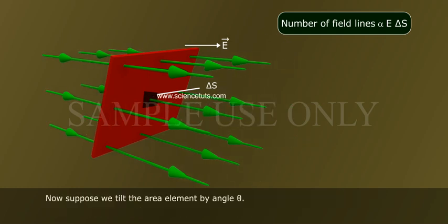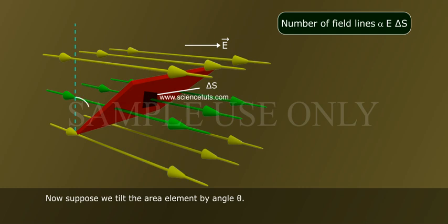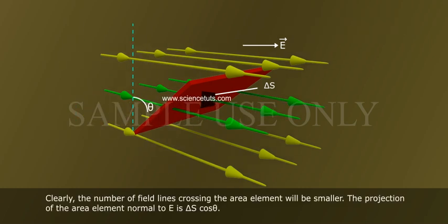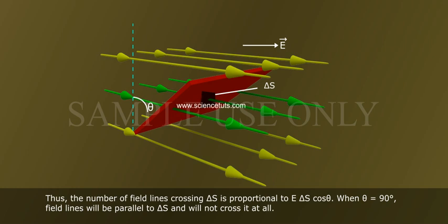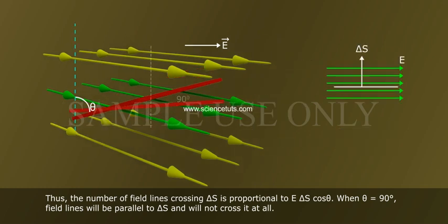Now suppose we tilt the area element by angle theta. Clearly, the number of field lines crossing the area element will be smaller. The projection of the area element normal to e is delta s cos theta. Thus, the number of field lines crossing delta s is proportional to e delta s cos theta. When theta equals 90 degrees, field lines will be parallel to delta s and will not cross it at all.